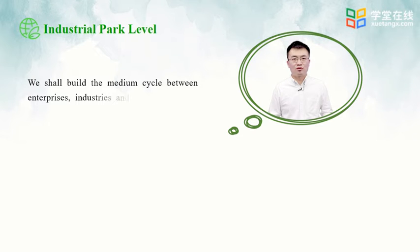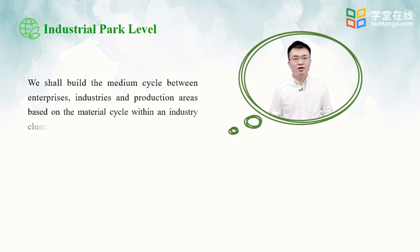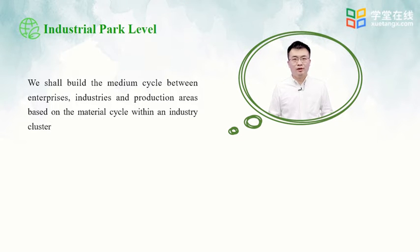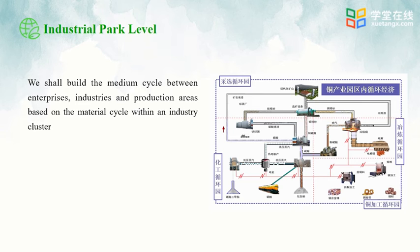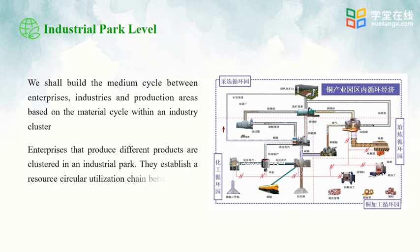Next is circular economy at the industrial park level. It uses material circulation in the industrial concentration area to build a medium cycle between enterprises, industries, and production areas. By clustering enterprises that produce different products in the park, different companies can build a resource recycling chain through trade. In this figure, we can see the circulation in the copper industrial park, including copper mining, copper smelting, copper product processing, and other chemical industries.